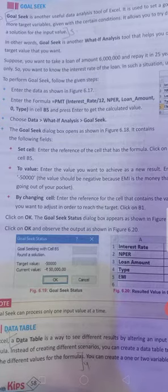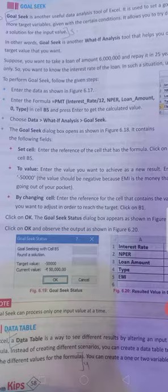So enter the formula equal PMT interest rate upon 12, NPR, loan amount, 0, type in cell B5 and press enter to get the calculated values. Choose data, what-if analysis, goal seek. The goal seek dialog box opens as shown.